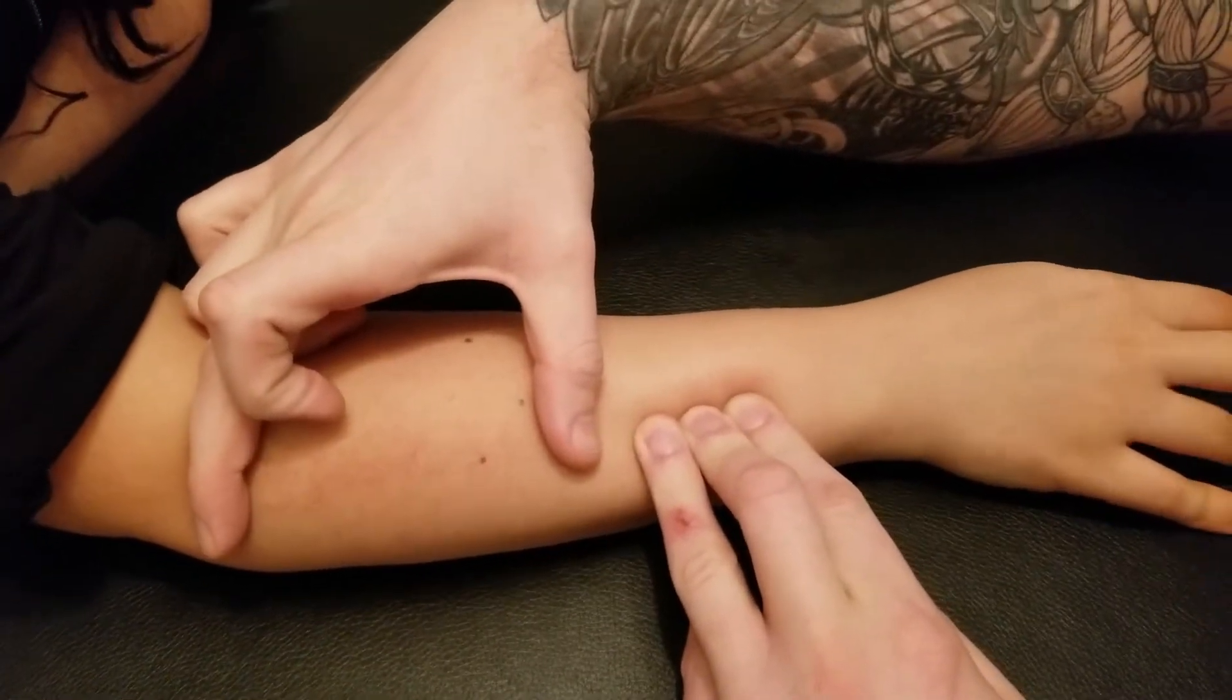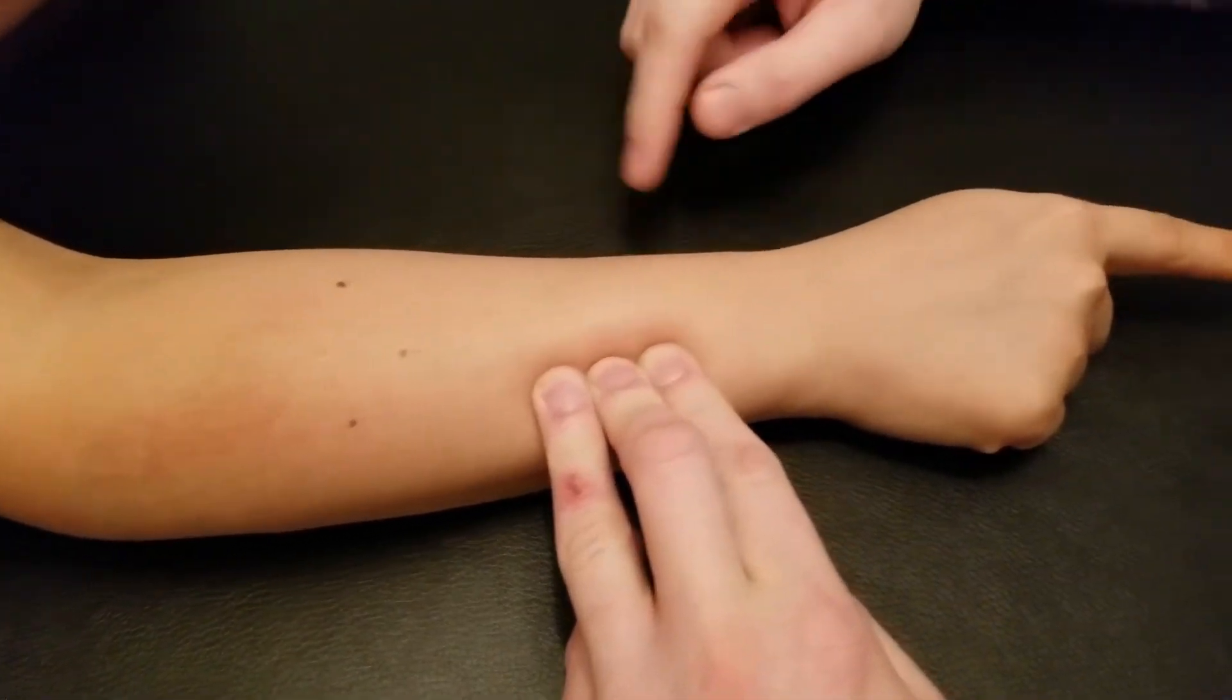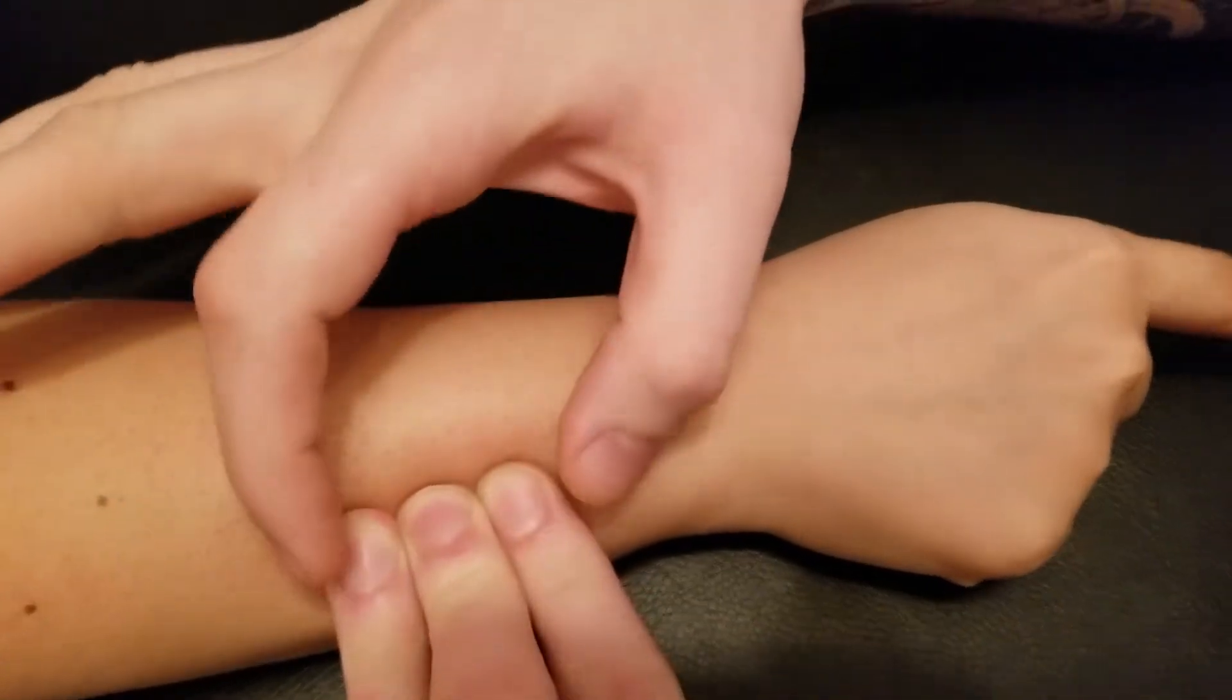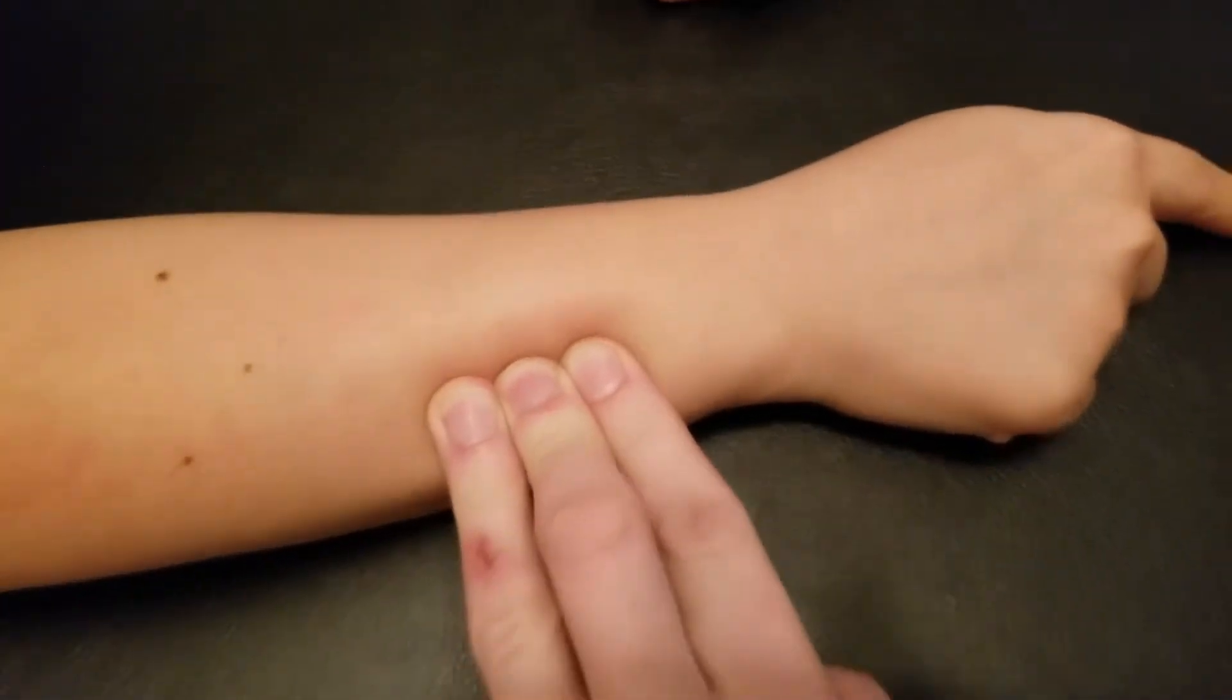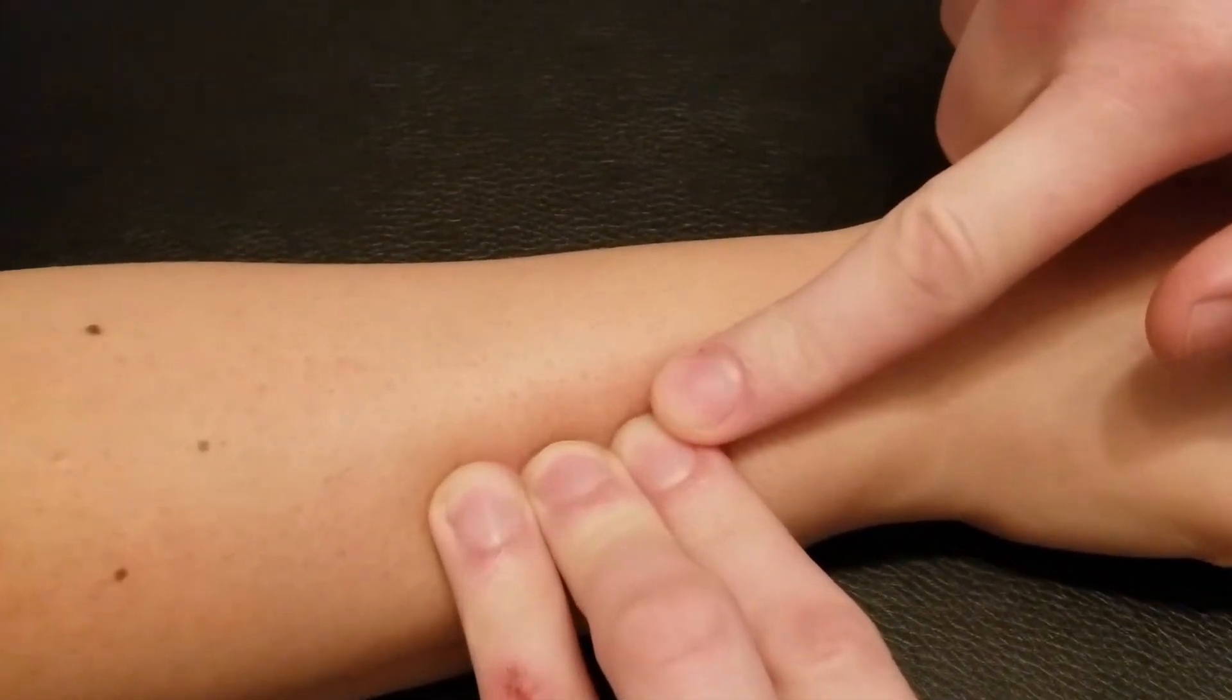Let's go back to just the index. Extensor indicis is going to be in the distal posterior, so you should notice the difference between those two. Now this tendon is going to be deep to extensor digitorum and the other muscles in this area.